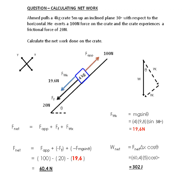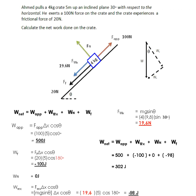In this lesson we saw two methods to calculate net work. The first method is to calculate the net force acting on the object and use it in W_net = F_net × Δx × cosθ. The second method is to calculate the sum of all individual work values: W_net = W_applied + W_gravity + W_normal + W_friction. Both methods give the same answer, and it is up to you to decide which one works better for you in the examination.